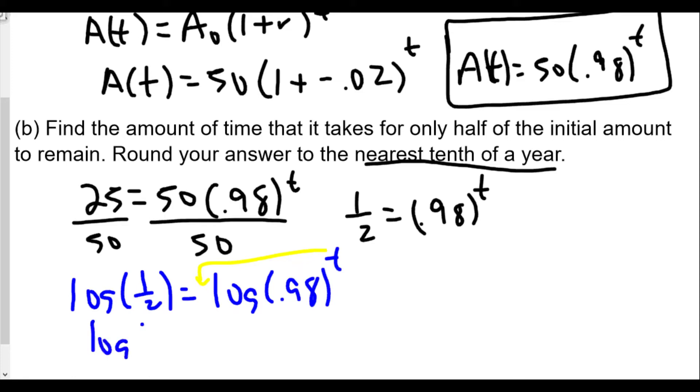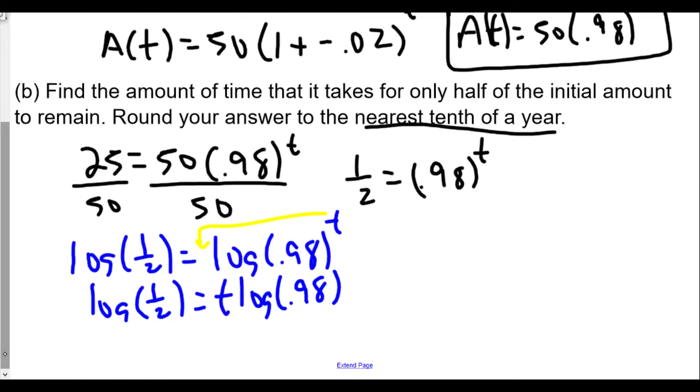And we get log of 1 half equals t times the log of 0.98. We'll divide both sides by the log of 0.98 to be able to get our t value. That should be the log of 0.98.